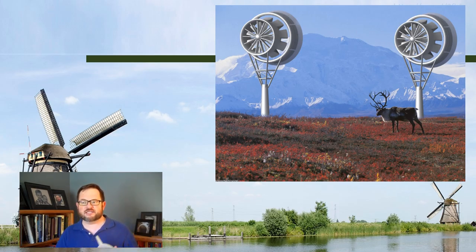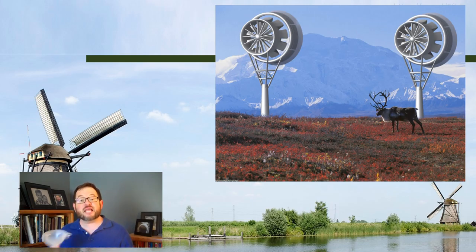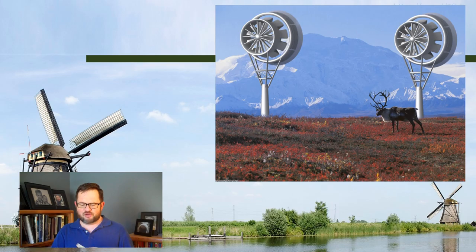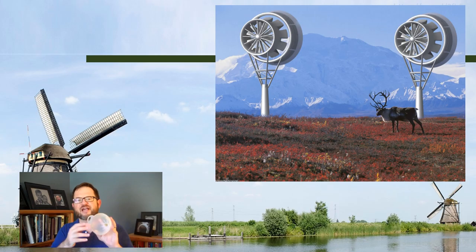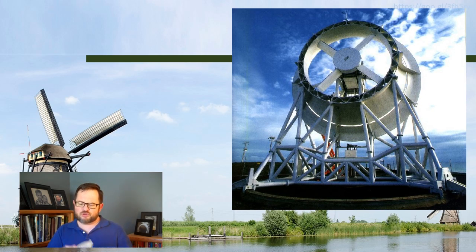Sometimes you hear these referred to as diffuser augmented wind turbines. Sometimes you hear these referred to as shrouded wind turbines. It's all terms for slightly different variations on the same technology, but it's this basic idea that you want to have the housing of the plane of the rotor have faster winds by having funneled winds from a larger cross section into the plane of the wind turbine.